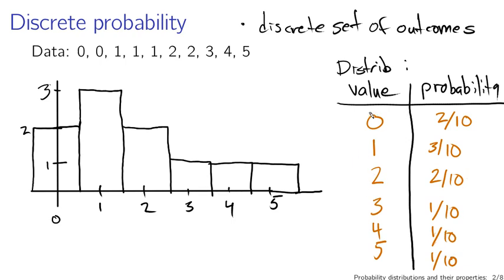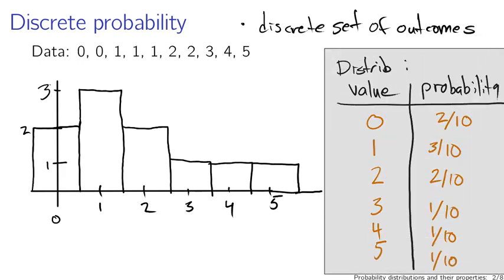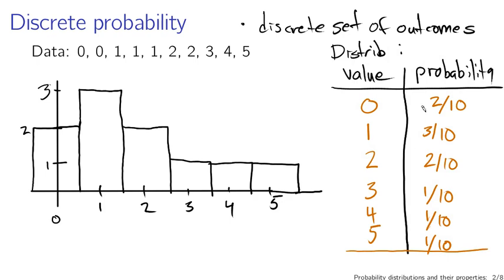Notice that if you add up two plus three plus two plus one plus one plus one, it adds up to ten out of ten. So the total probability of drawing any number is one — that is a certainty. If you only have a discrete set of outcomes like integers, you're dealing with a discrete probability distribution, and the sum of all probabilities must sum to one.